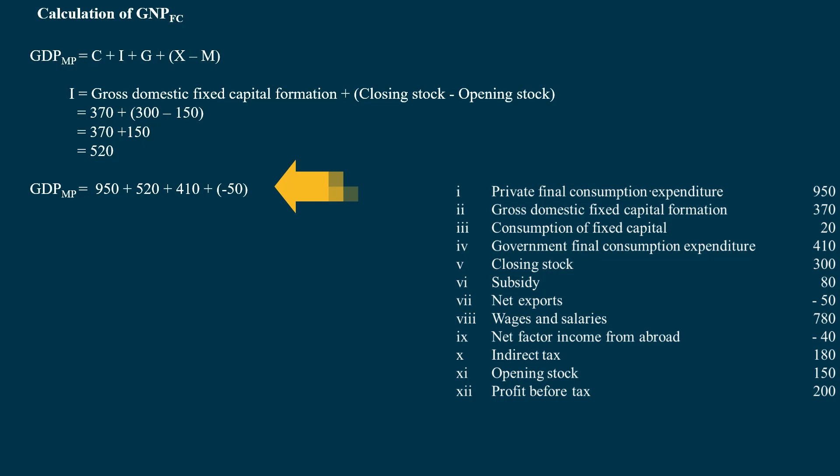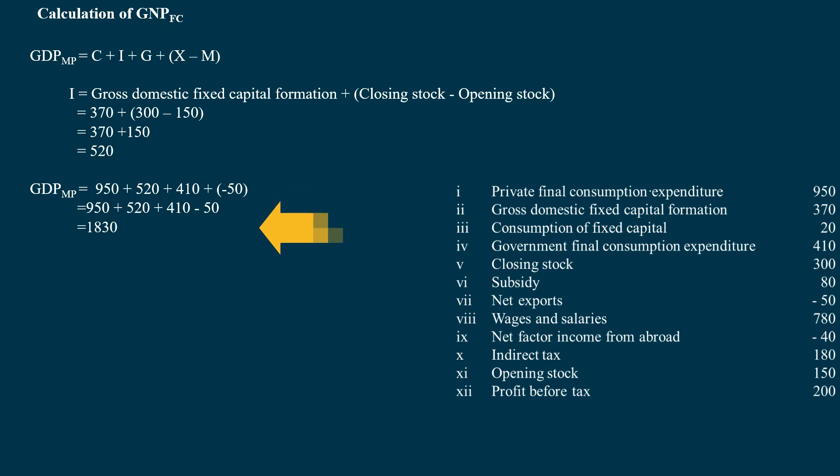Gross Domestic Product at Market Price = 950 + 520 + 410 + (negative 50) = 950 + 520 + 410 - 50 = 1,830 Crores.